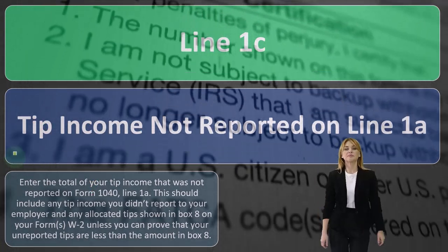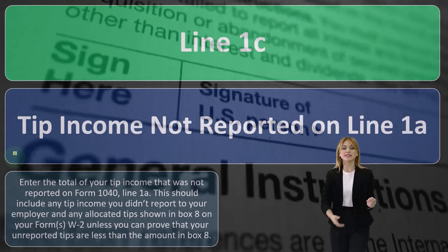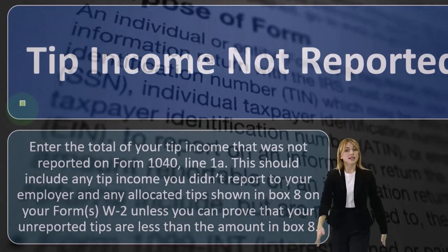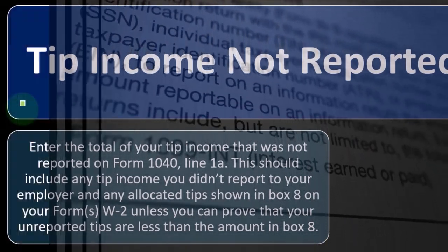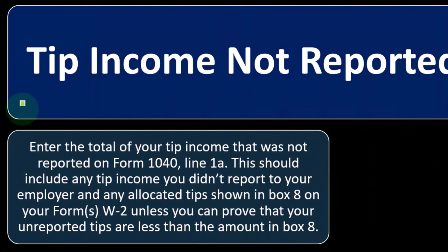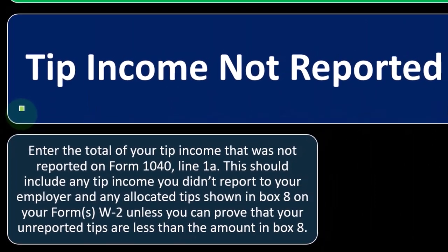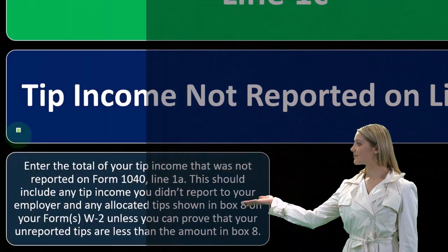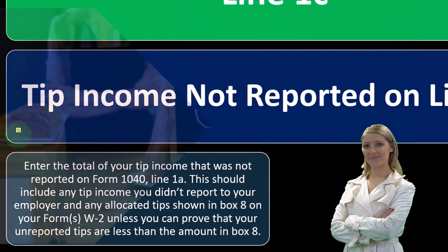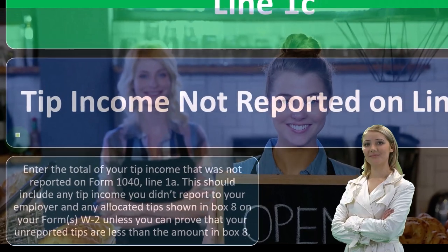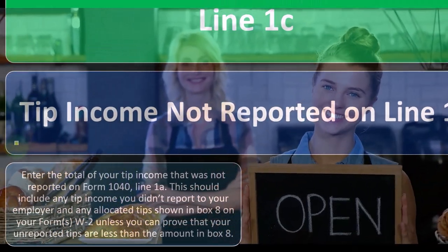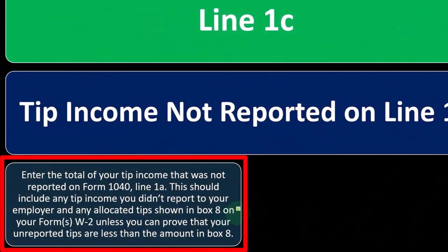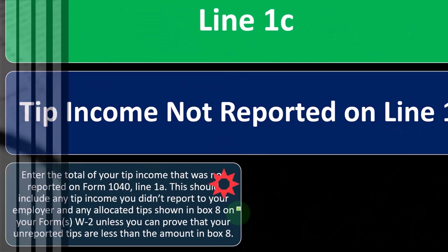Now the question is: are tips being reported on Form W-2? If they are, you're paying taxes on them. If they're not, you still have tip income that the IRS wants a piece of. This should include any tip income you didn't report to your employer and any allocated tips shown in Box 8 on your Form W-2, unless you can prove that your unreported tips are less than the amount in Box 8.